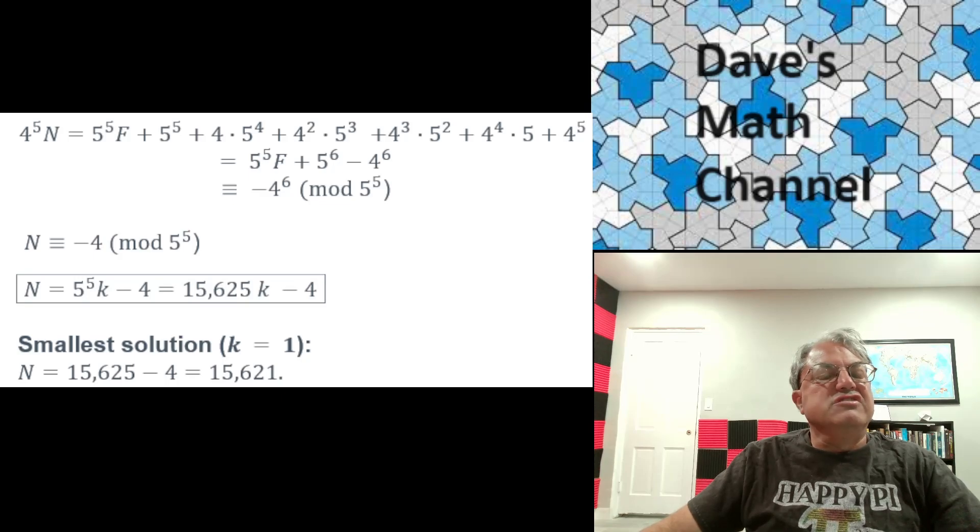So 4 to the fifth N is equal to 5 to the fifth F plus this ugly quantity: 5 to the fifth plus 4 times 5 to the fourth plus 4 squared times 5 cubed, and so on up to 4 to the fifth. You can actually use the finite geometric series formula to simplify these numbers on top. It's just 5 to the sixth minus 4 to the sixth over 5 minus 4, but 5 minus 4 is 1. So you're going to get 4 to the fifth N equals 5 to the fifth F plus 5 to the sixth minus 4 to the sixth. Well, now we can do something clever.